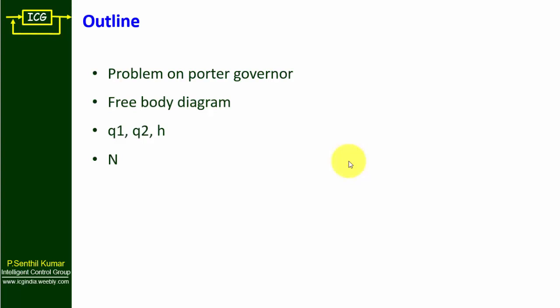After finding N, there is one more parameter to find: the effect of friction acting on the Porter governor. By considering friction, we need to find the maximum speed N1f and minimum speed N2f of the governor. Using N1f and N2f, we finally find the range of speed of the governor with the effect of friction.